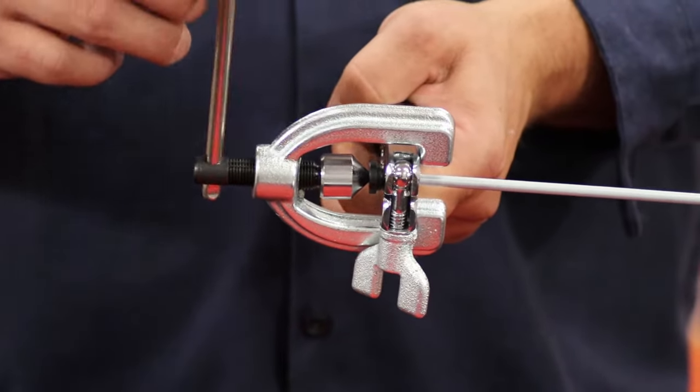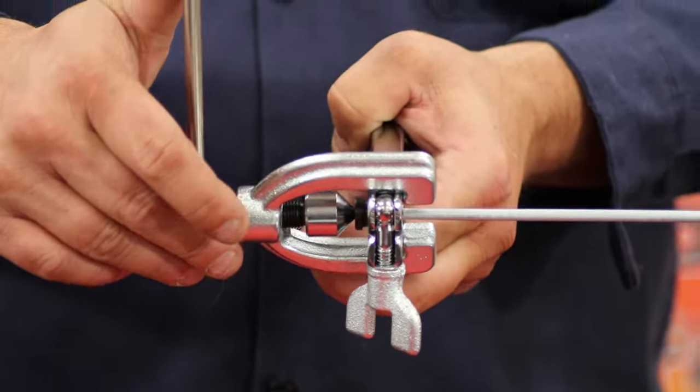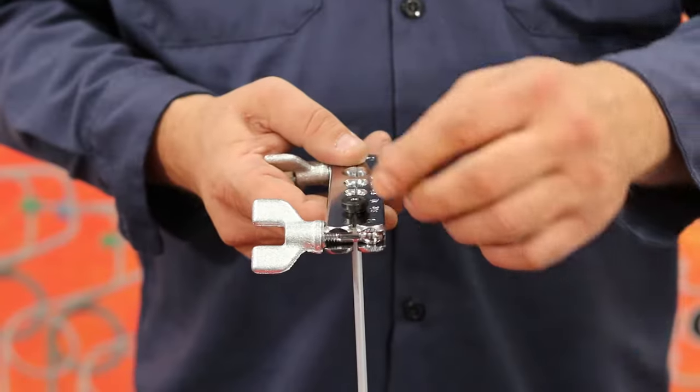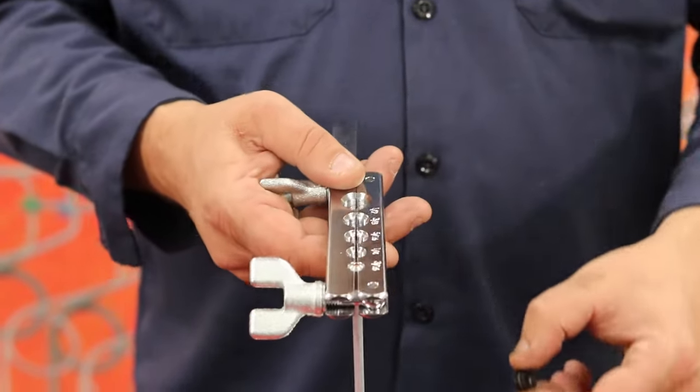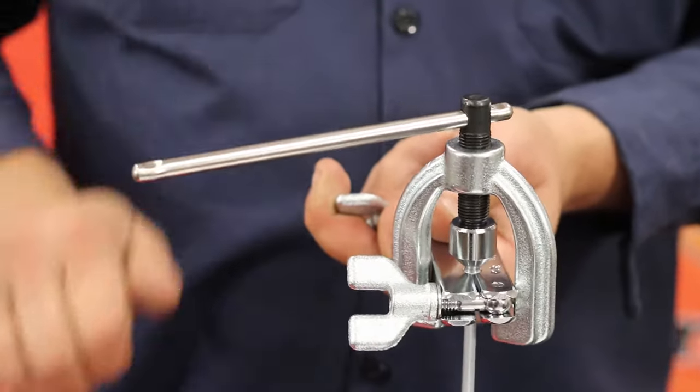Make sure you do not over tighten the tool. When the button die is at the die block, you are done. Now loosen the clamp and remove the button die and tighten the handle again. This will fold over the tube to form a smooth, uniform flare.